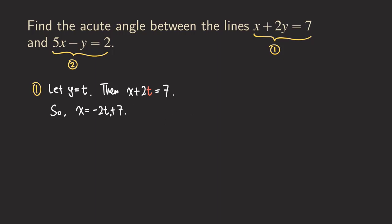Since I already have expressions for both x and y in terms of t, I can write line 1 in vector form. The vector equation for line 1 is the vector (negative 2t plus 7, t), where the first component is x and the second component is y.